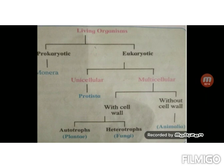Now, we will go further. Organisms with cell wall are again divided into two categories: autotrophs and heterotrophs. Auto means own. Therefore, autotrophs means preparing their own food. Plants come under this category because they have a green pigment called chlorophyll which helps in photosynthesis, that is preparation of food.